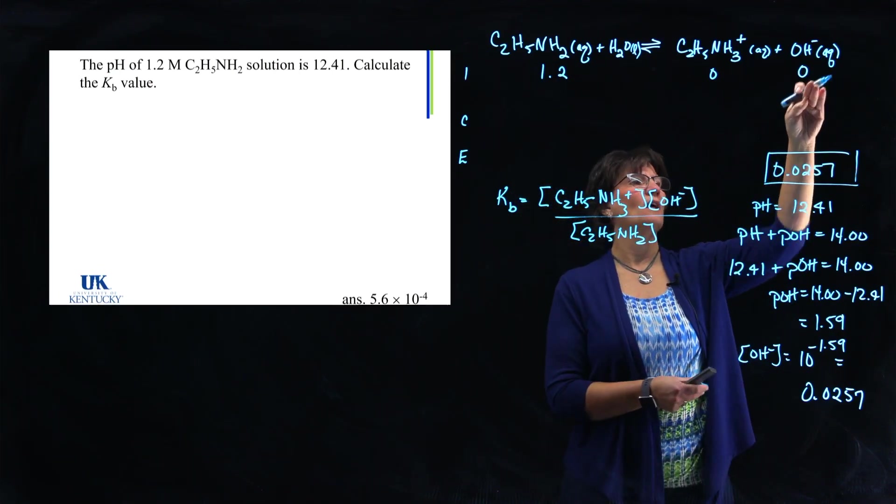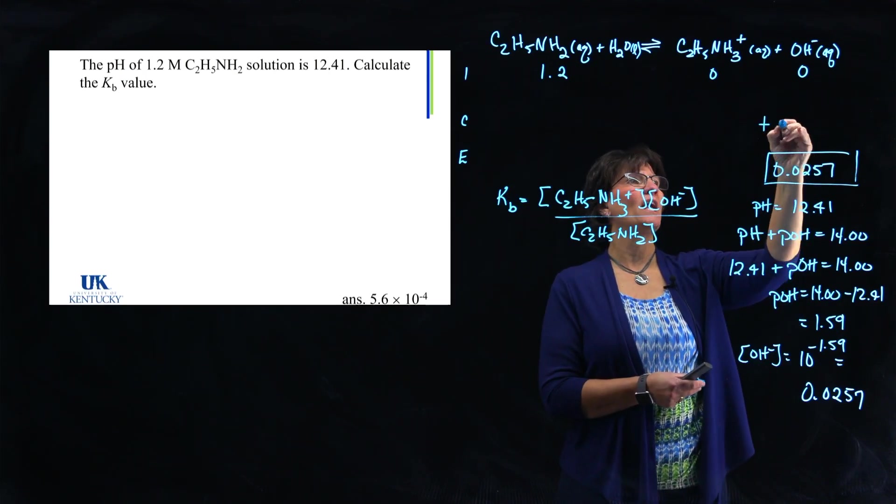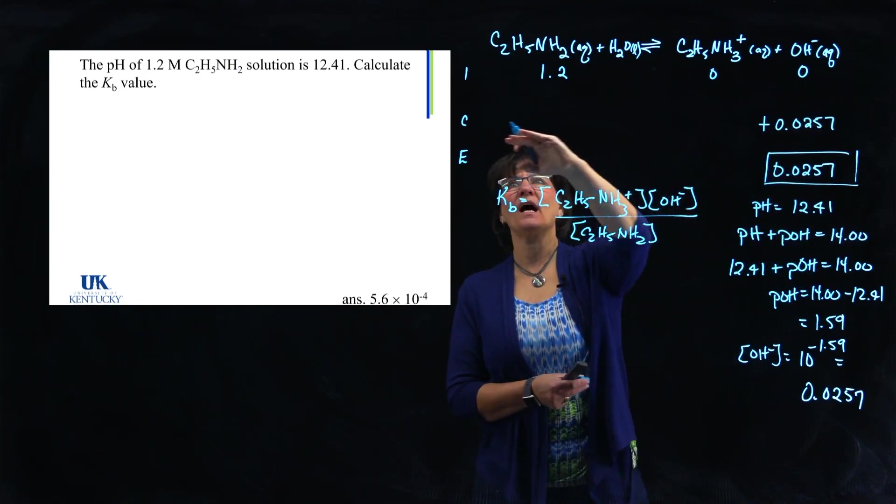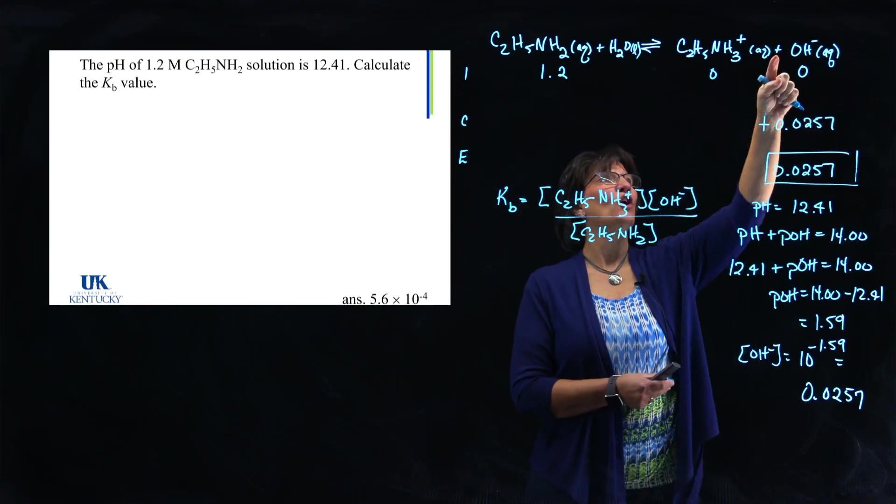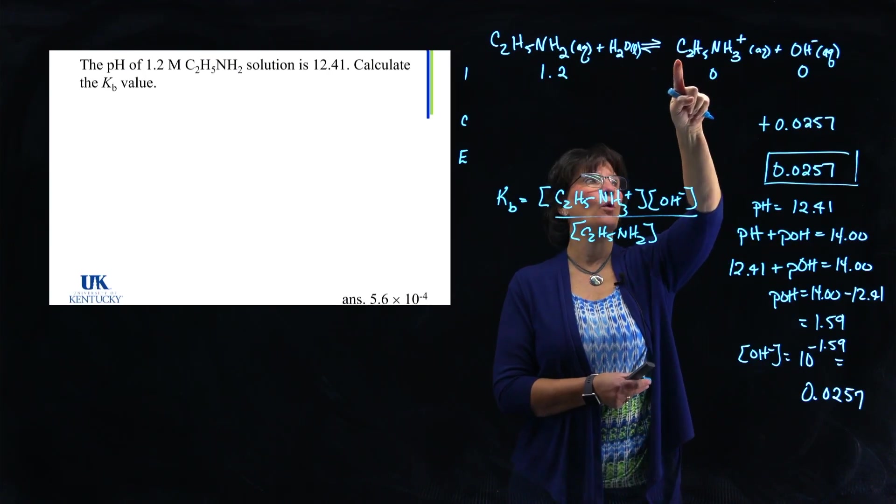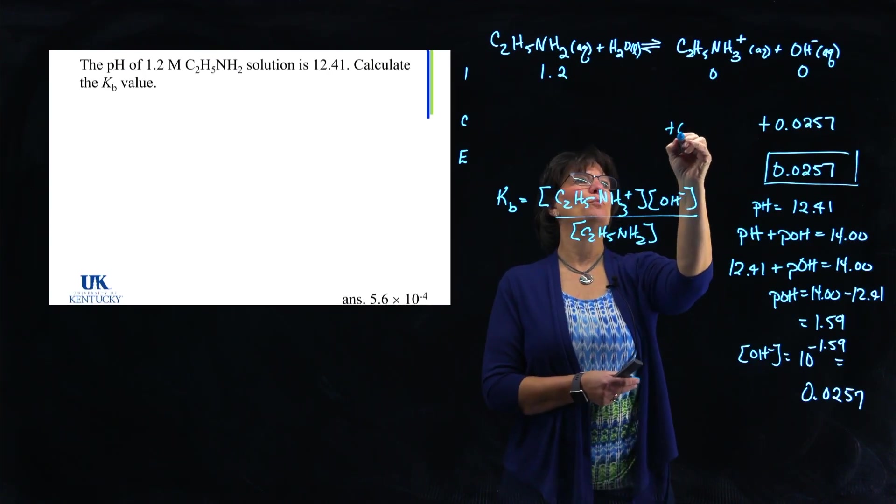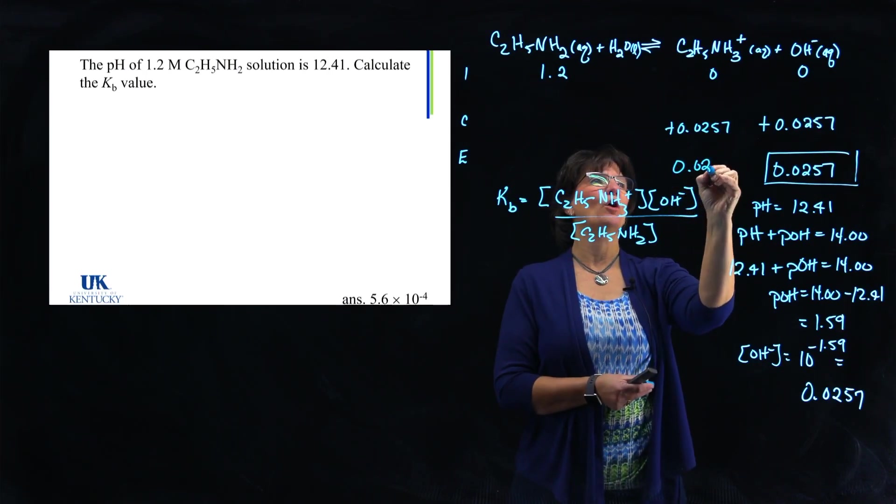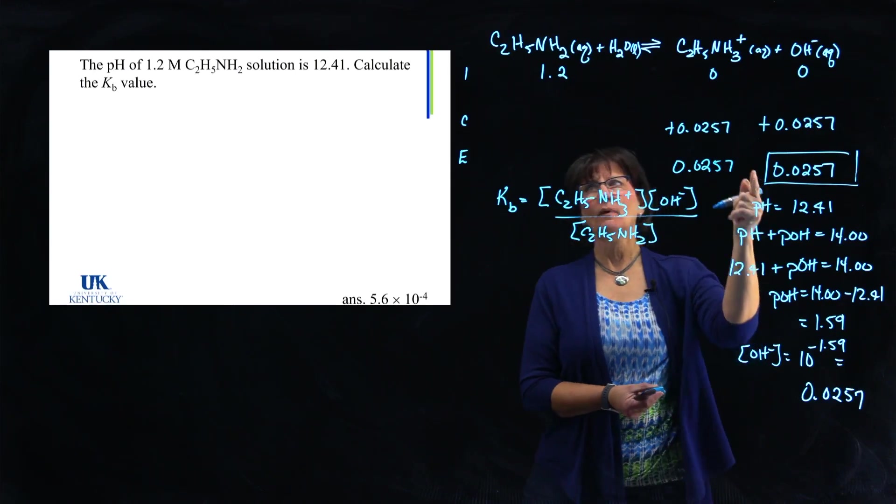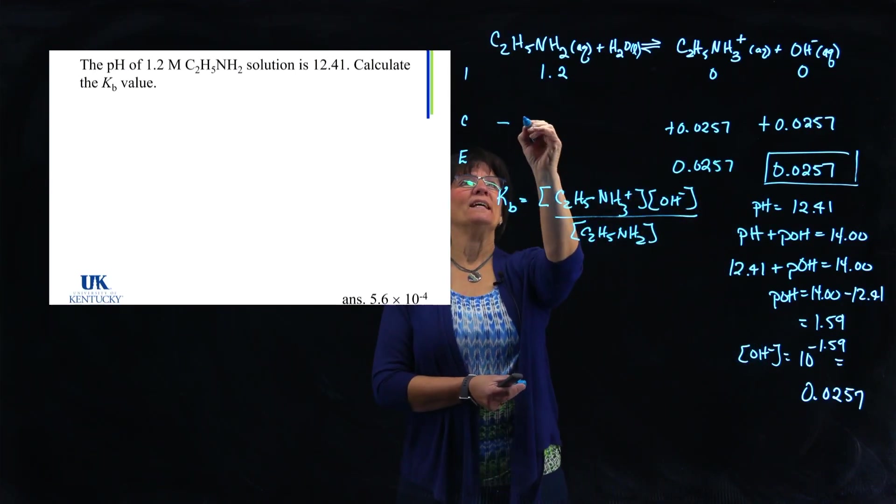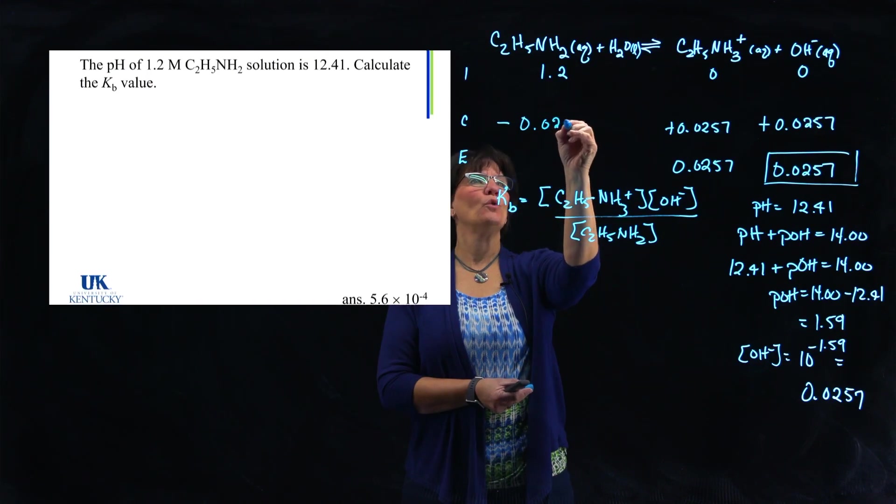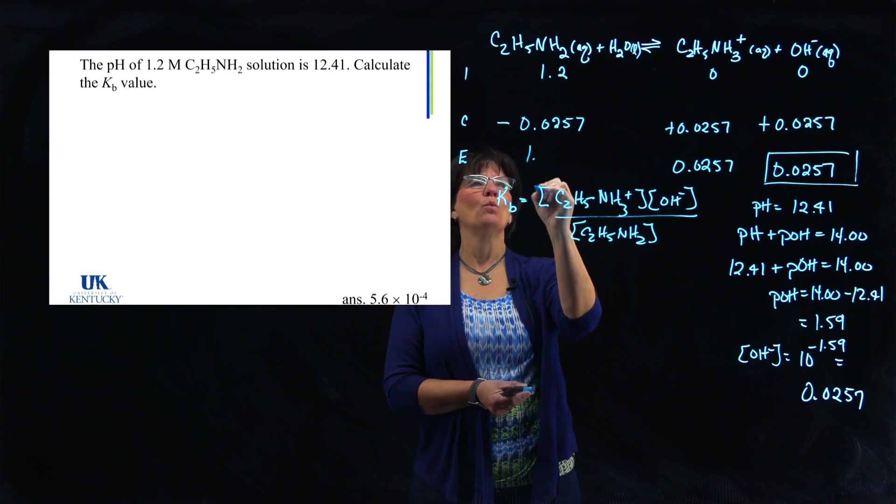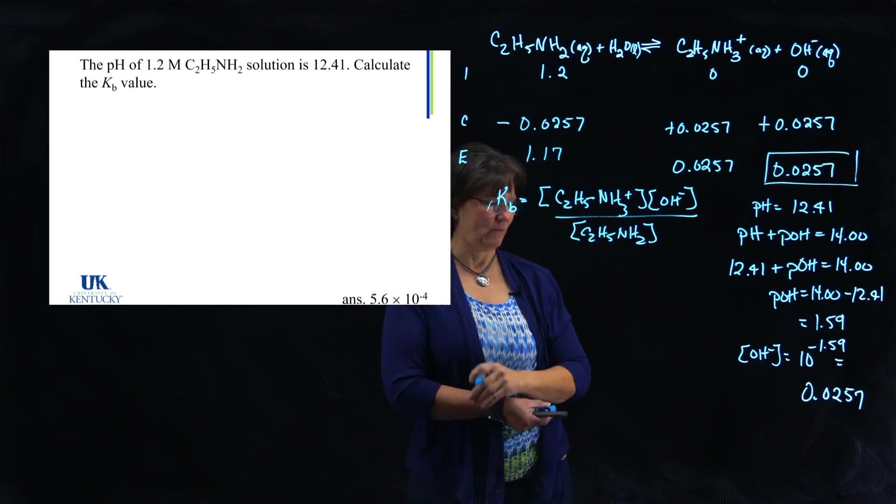So that number, all of this is so I can know this number right here, 0.0257. With that number, we can fill in this table and not use X's. If it started with nothing or essentially nothing and ended with this, we must have done in our change line a production of 0.0257. And we know that change line is this reaction taking place. So every time one of these forms, one of those forms right along with it. So I must have produced 0.0257 here, which gives me at equilibrium that. And I reacted, used up 0.0257 here. And that changes that number ever so slightly to 1.17.